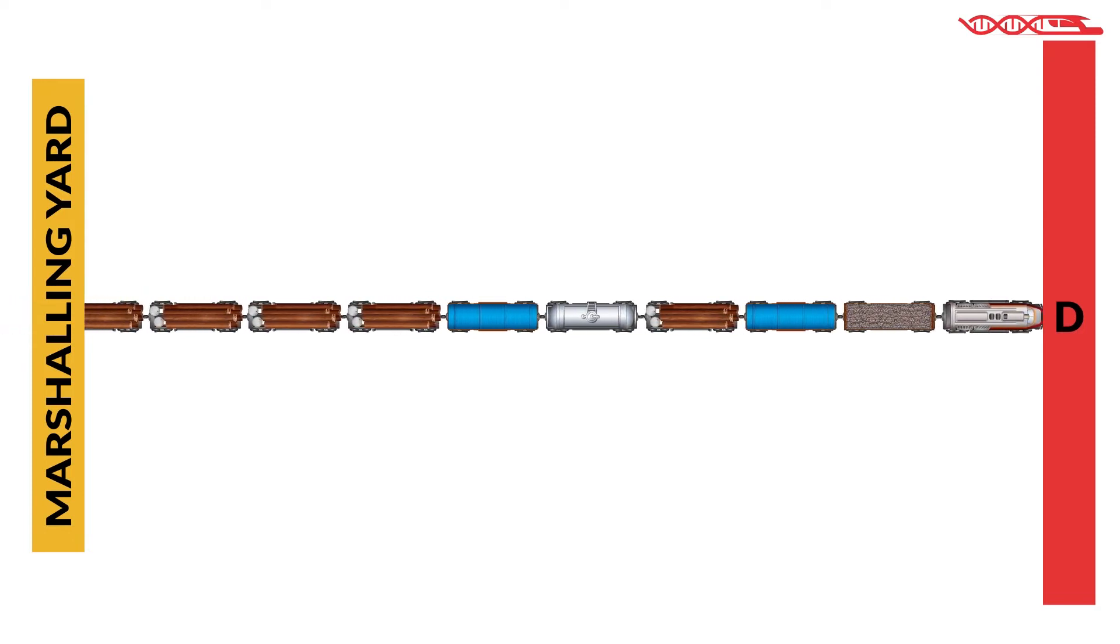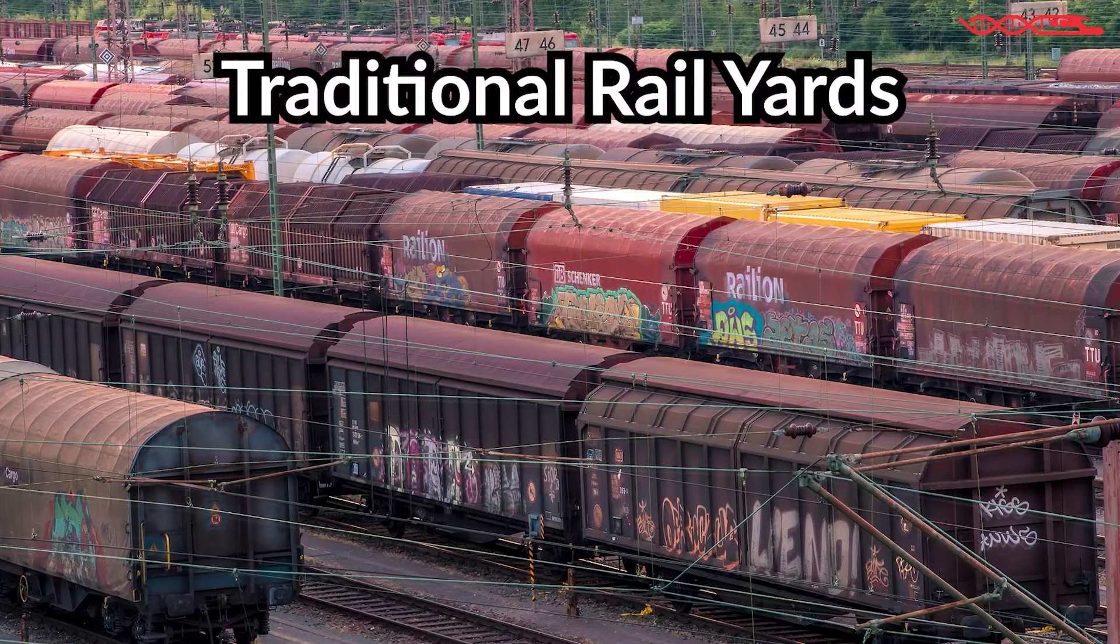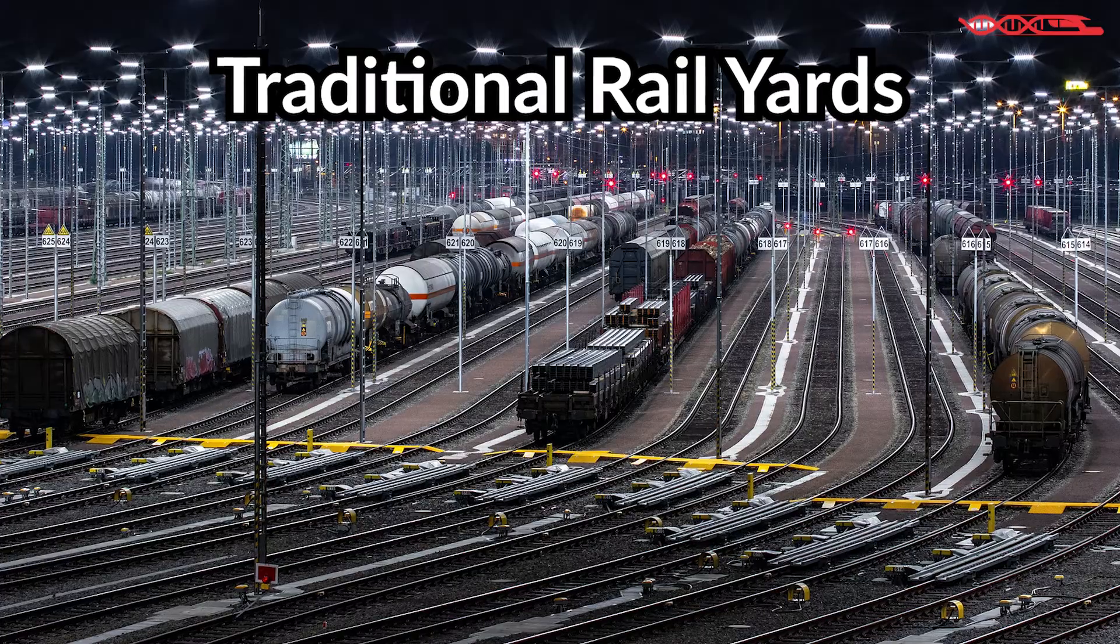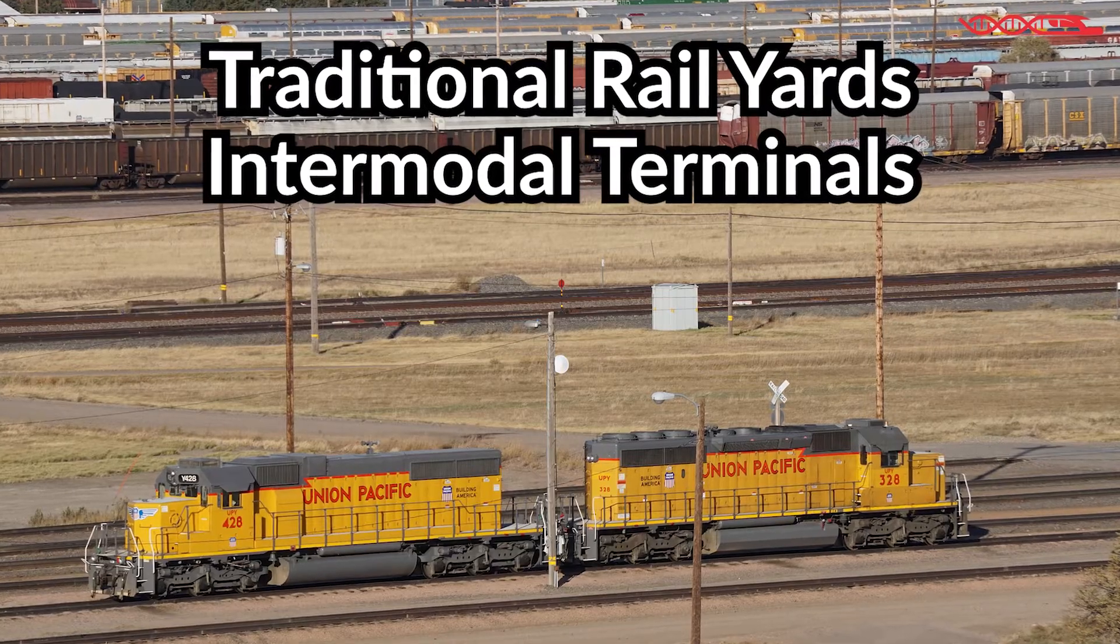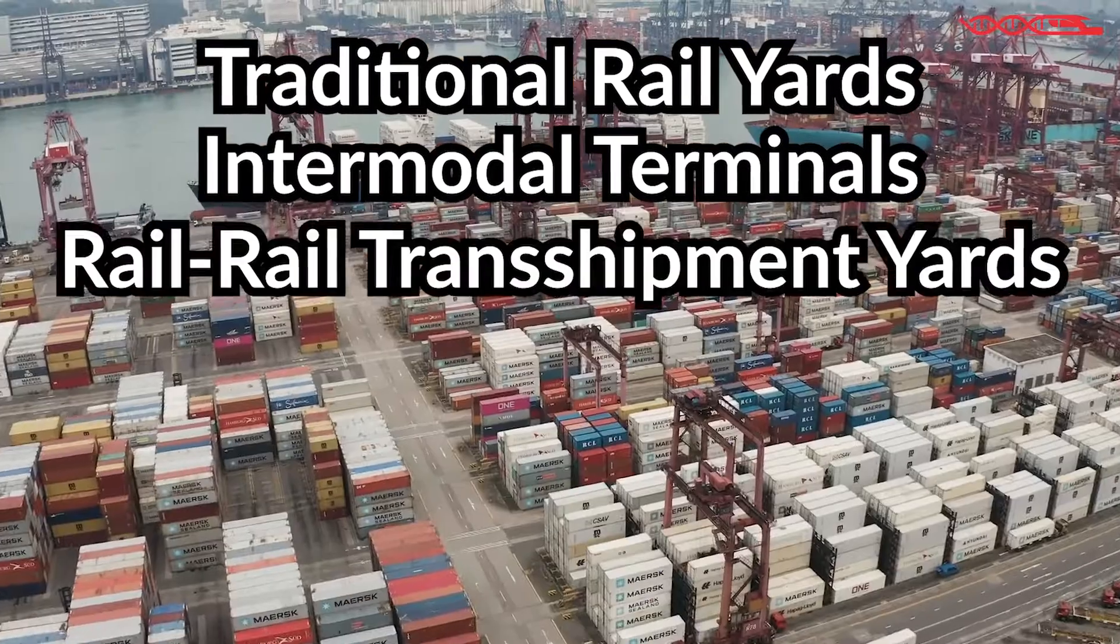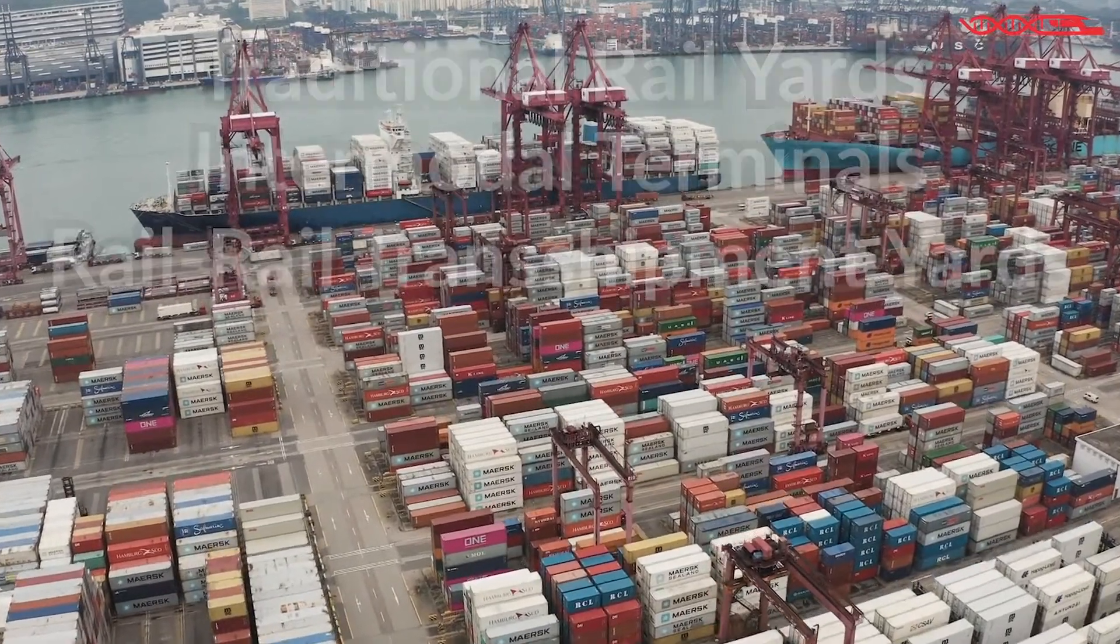There are usually more cars, but this is just for illustration. There are three different types of marshaling yards. First is traditional marshaling yards, also called shunting yards. Second is railroad terminals or intermodal terminals, and third is fully automated rail transshipment yards.